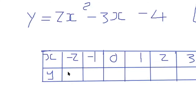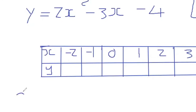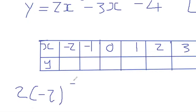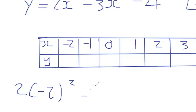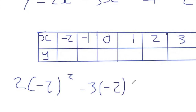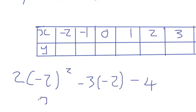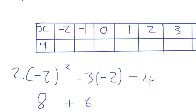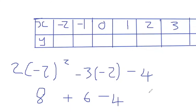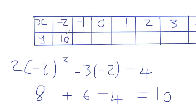Let me start with negative 2, replacing the variable x squared and x with negative 2. So I have 2 times open bracket, negative 2 squared, minus 3 times negative 2, minus 4. Negative 2 squared is positive 4, times 2 gives us positive 8. Negative 3 times negative 2 is positive 6. Take away 4: 8 plus 6 minus 4, so my answer is 10. That's my first y value in the table.